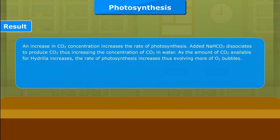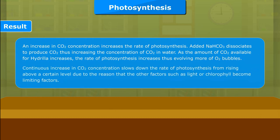Continuous increase in CO2 concentration slows down the rate of photosynthesis from rising above a certain level due to the reason that the other factors such as light or chlorophyll become limiting factors.